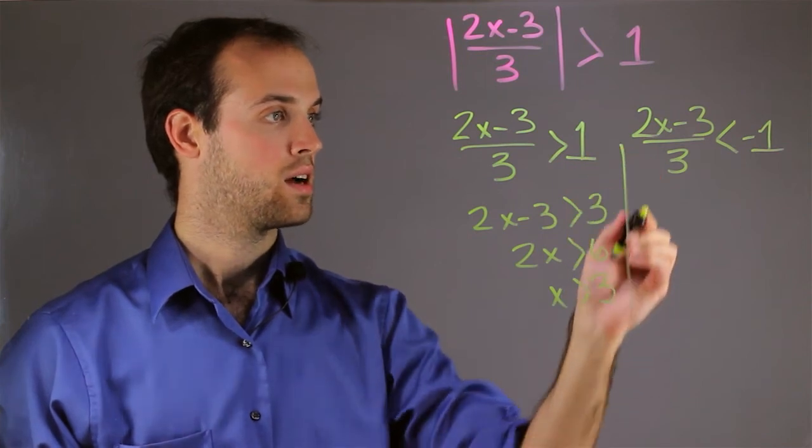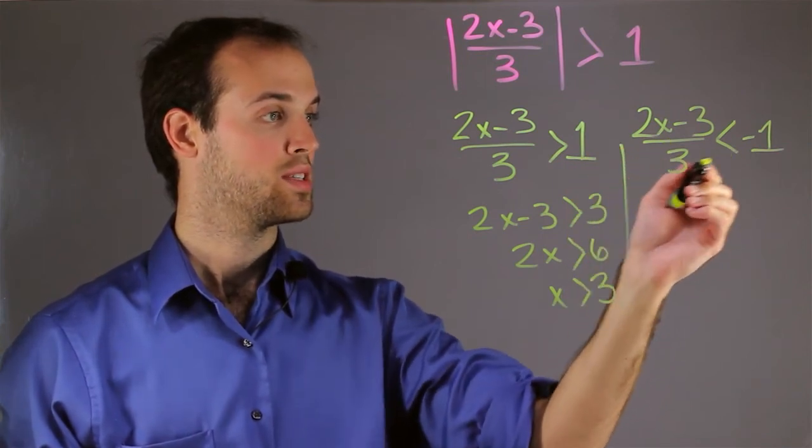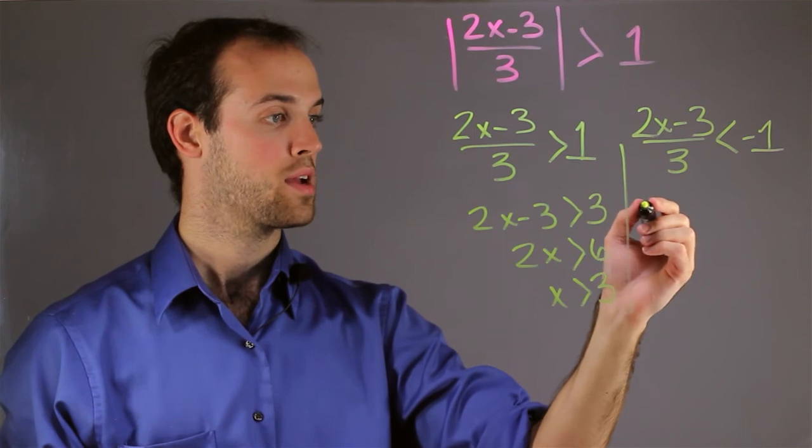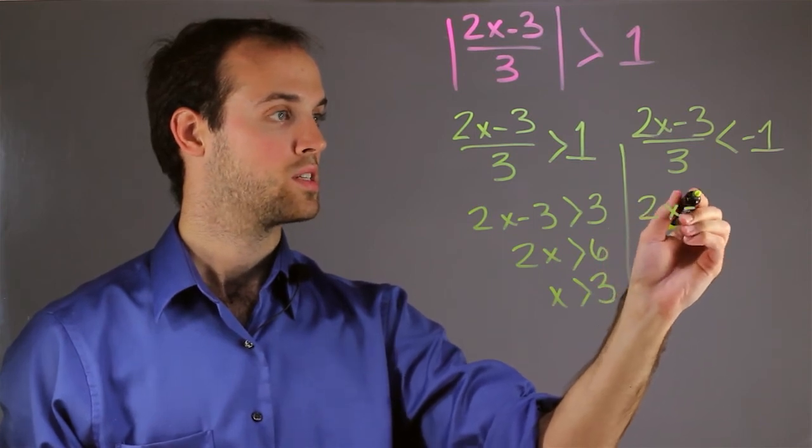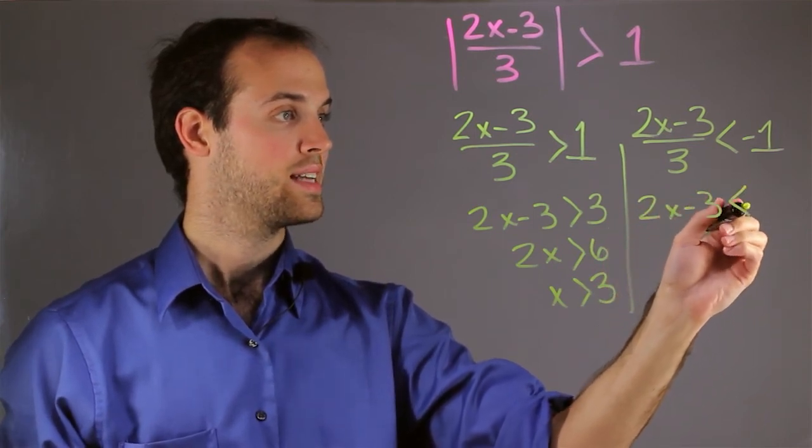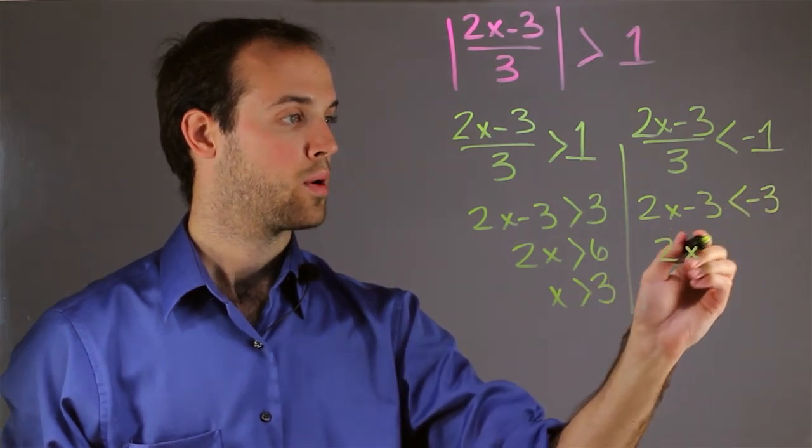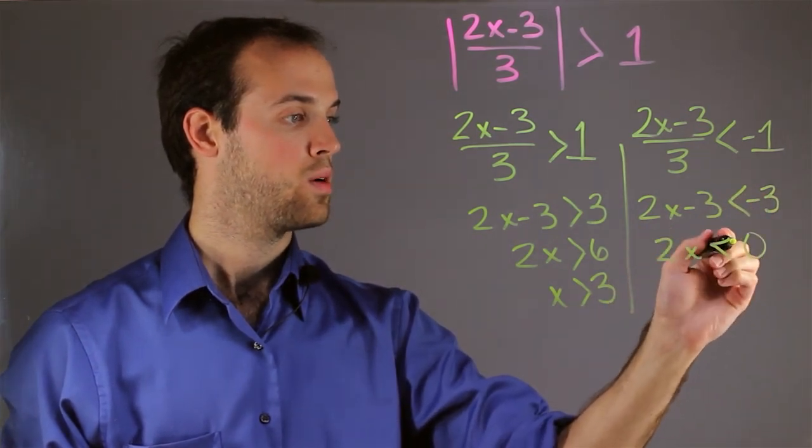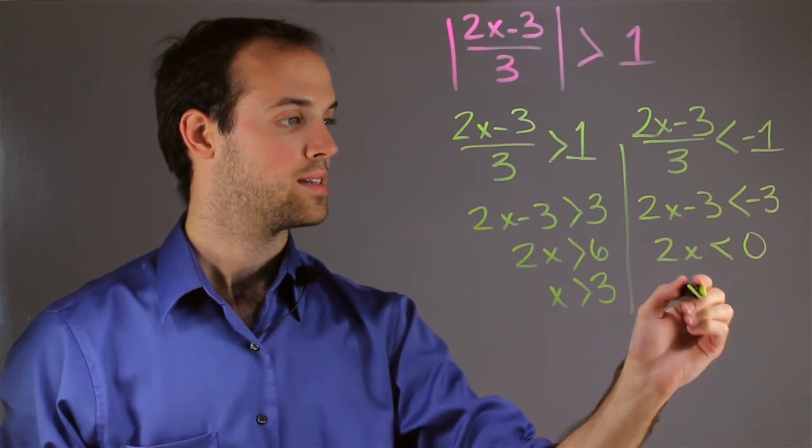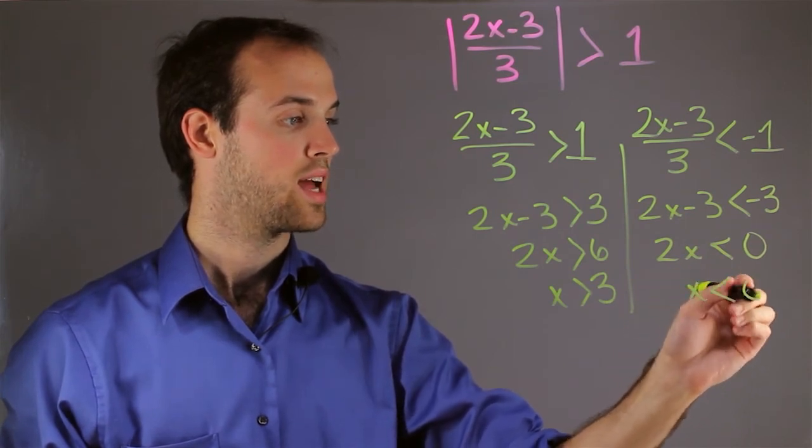And then over here, for this solution, I want to do the same thing. Multiply both sides by 3, which gives me 2x minus 3 is less than negative 3. Add 3 to both sides, which gives me 2x less than 0. And divide both sides by 2, which gives me x less than 0.